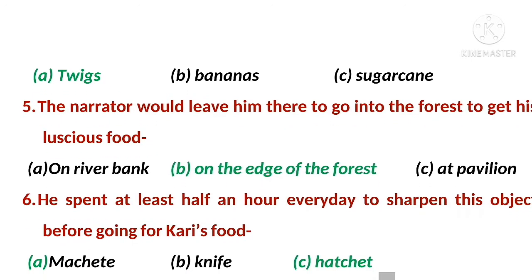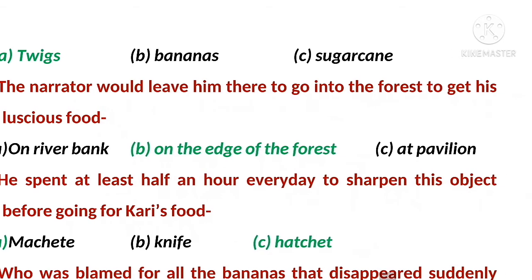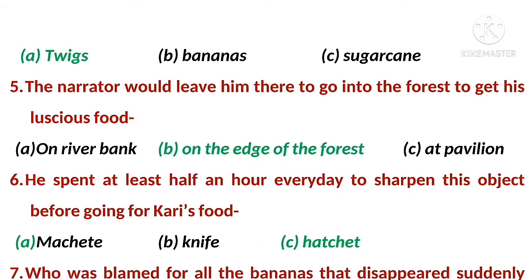Number five: the narrator would leave him there and go into the forest to get his luscious food. The right option is B — on the edge of the forest. Number six: he spent at least half an hour every day sharpening this object before going for Kari's food. The right option is C — hatchet.